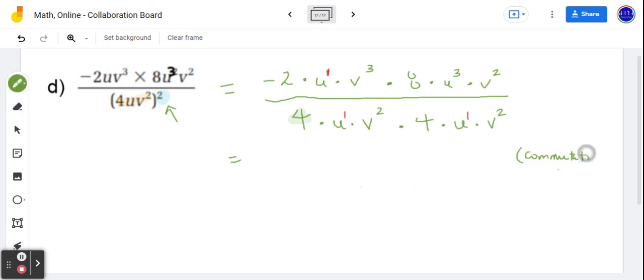So just remember that with the commutative property, the order in which you multiply values, it doesn't matter. You will still end up with the same value or the same expression. Simplified.